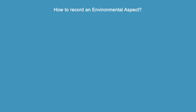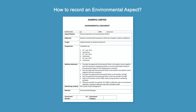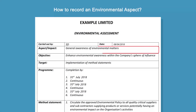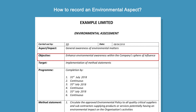Now let's look at how you record an environmental aspect. Here is a template you can use. The environmental aspect identified in this example is the general awareness of environmental matters. Using this aspect we can define an objective for you, which is to enhance environmental awareness within the company's sphere of influence.